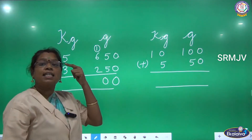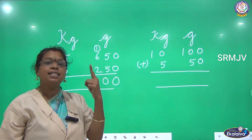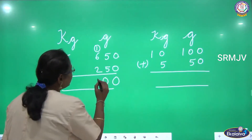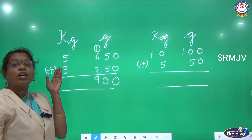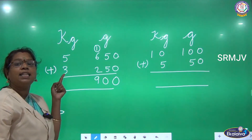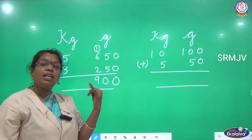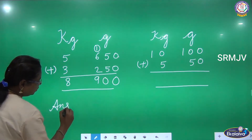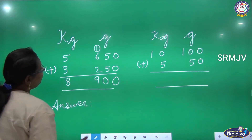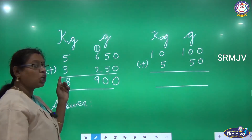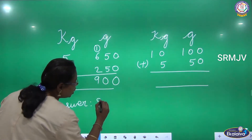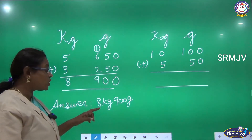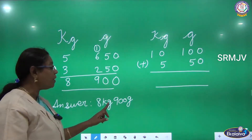Now 1 plus 6: six in the mind, one in the finger — six, seven. Then seven plus 2: seven in the mind, two in the finger — seven, eight, nine. So we get 9 there. Now adding the kilograms: five in the mind, three in the finger — five, six, seven, eight. So when we add 5 kilograms and 650 grams with 3 kilograms and 250 grams, we get 8 kilograms and 900 grams. We write the units along with the answer.